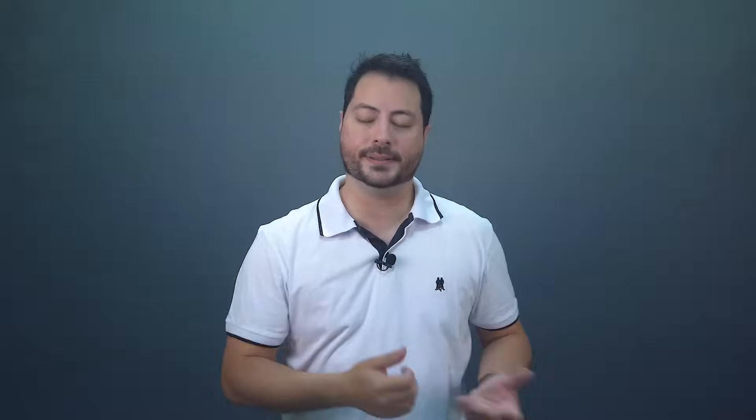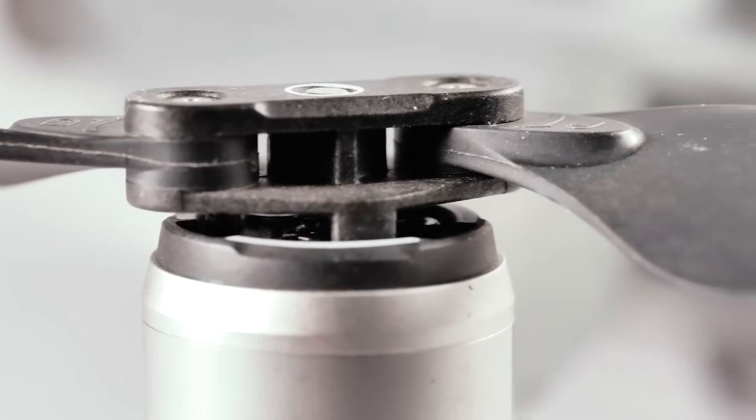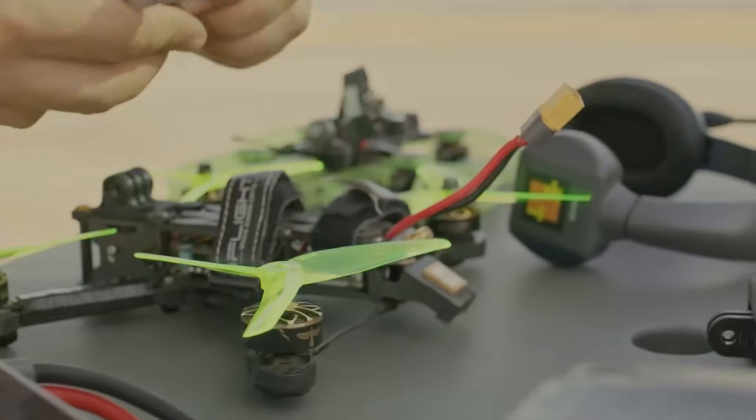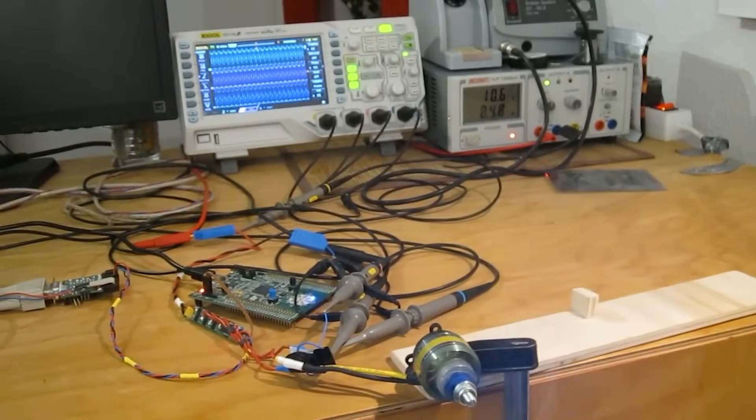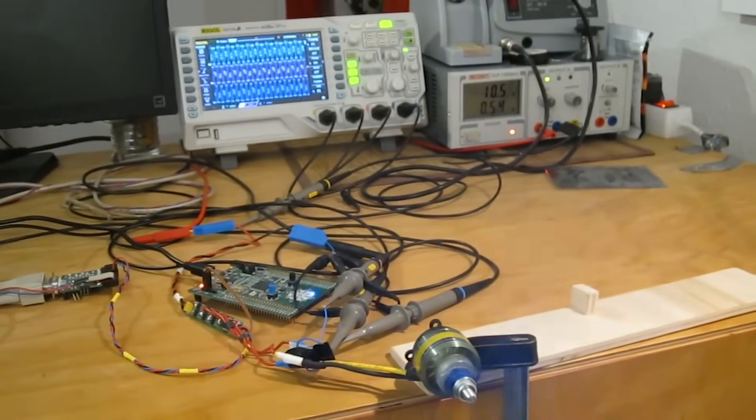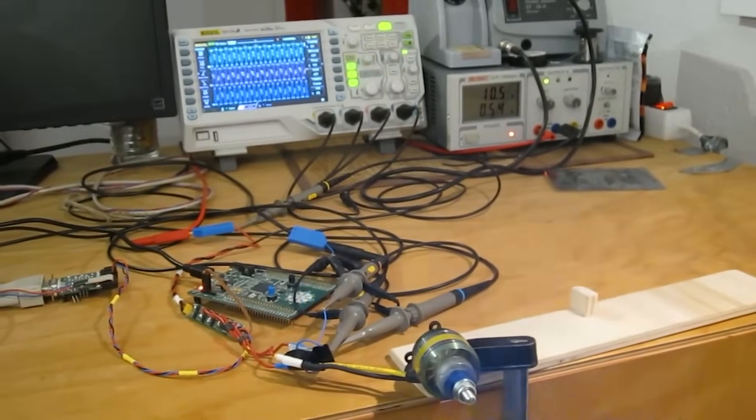And what are the advantages? The absence of brushes reduces energy losses due to friction, making brushless motors more efficient. The lack of moving parts subject to mechanical wear contributes to a longer lifespan. This electronic control allows for fine adjustments in speed and direction, providing a smooth and quick response. And for those who have worked with conventional electric motors, you know that eliminating brushes reduces the need for regular maintenance, making brushless motors more practical for long-term applications.